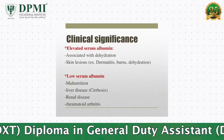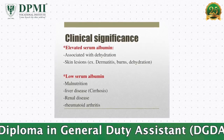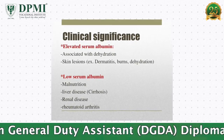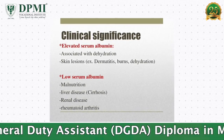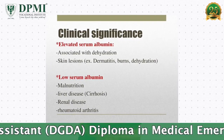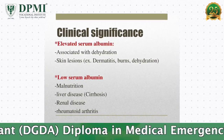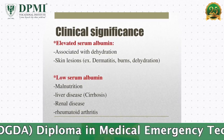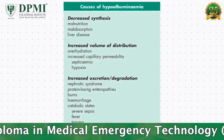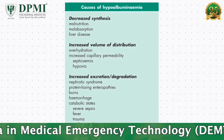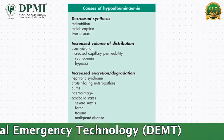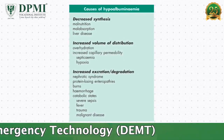Clinical Significance: Increased serum albumin levels or hyperalbuminemia occurs in dehydration. Decreased serum albumin level or hypoalbuminemia is observed due to impaired synthesis, increased catabolism, reduced absorption, and protein loss through urine in nephrotic syndrome, cancer, burns and ascites.